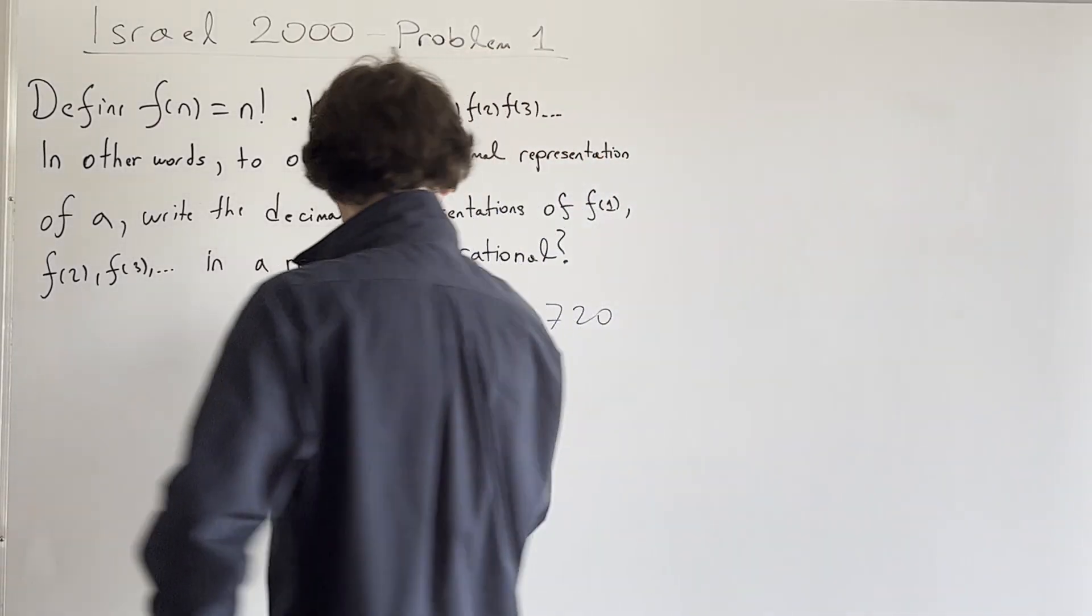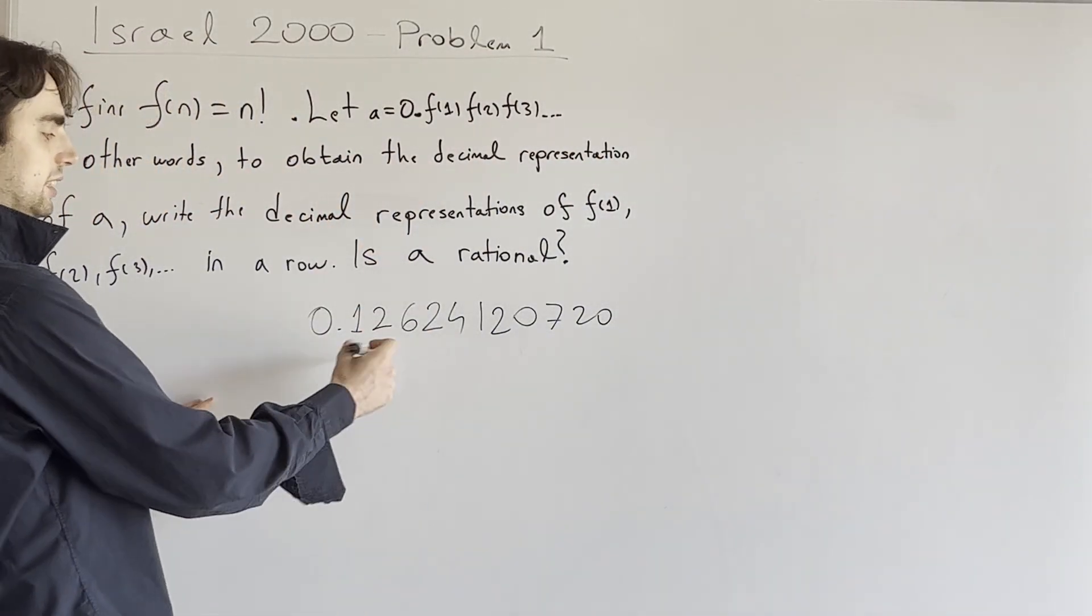And how do we do that? Well, let's assume that starting from some N, let these digits be A1, A2, A3, A4, A6...